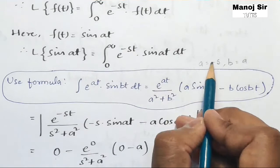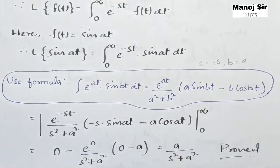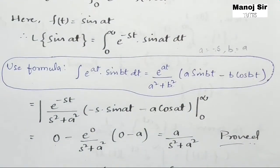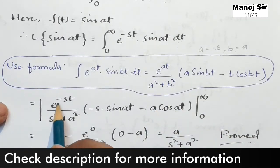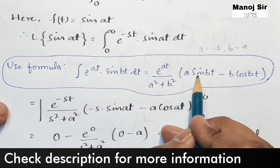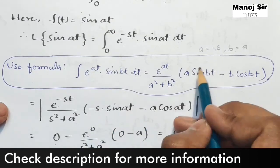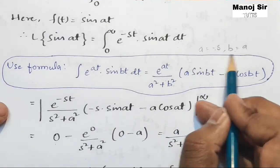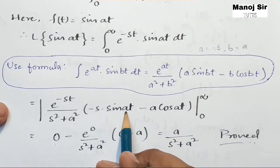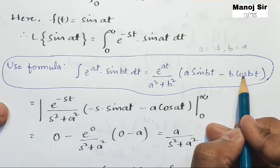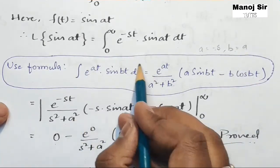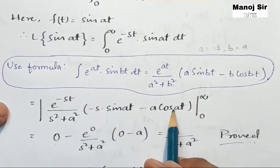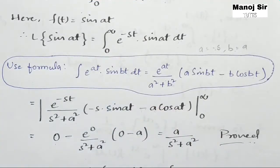Comparing our integral with the formula, we find a is minus s and b is a. Solving the integration: e^(at) upon a² plus b² becomes e^(−st) upon s² plus a². Coming to the bracket, a·sin(bt) becomes minus s·sin(at) because a is minus s and b is a. Then minus b·cos(bt) becomes minus a·cos(at), because b equals a.